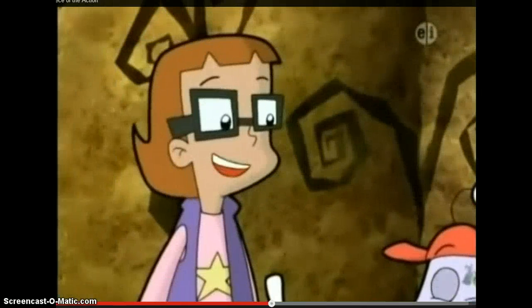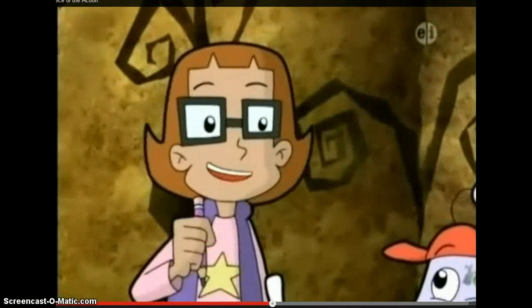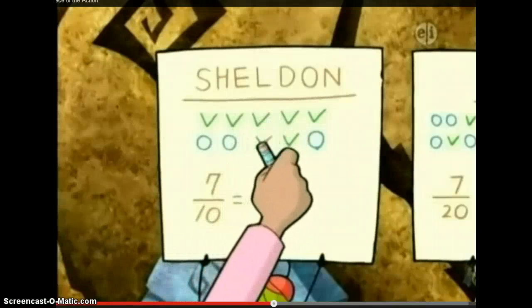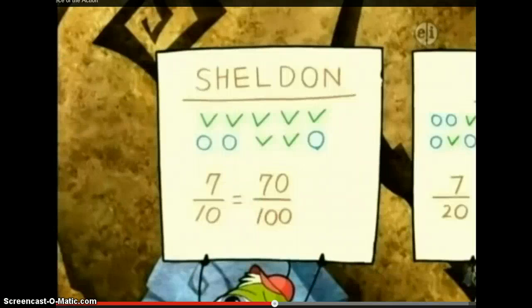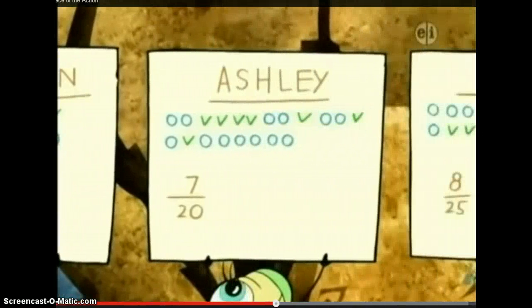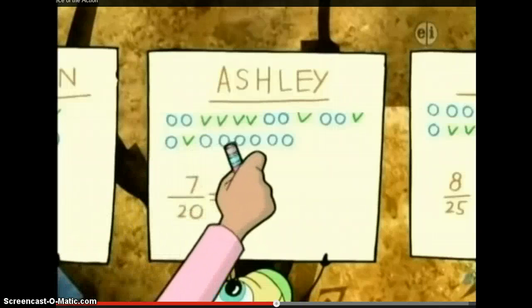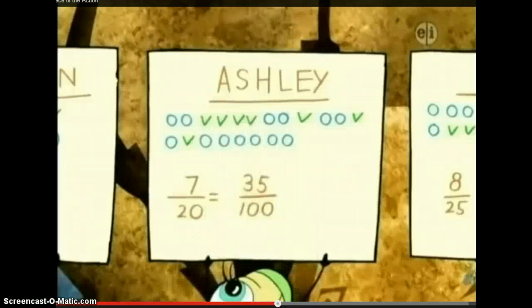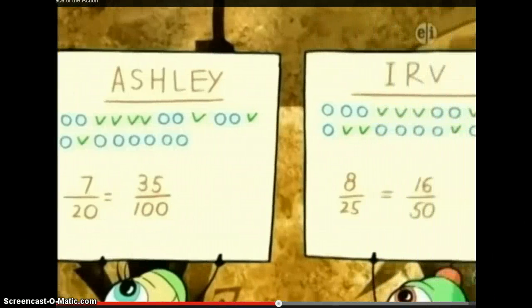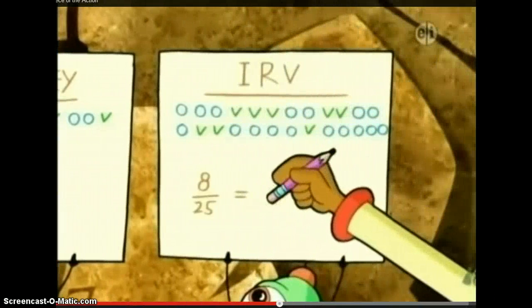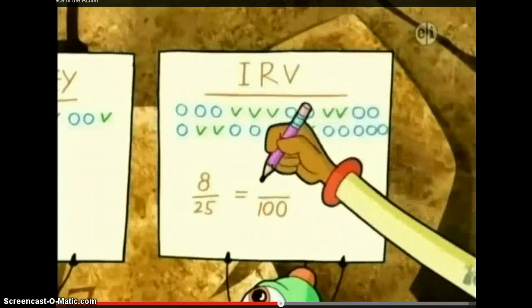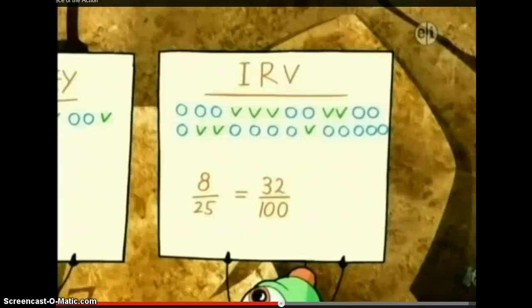Guys! We're losing time here! How about one hundred? That's a nice round number! Ditch, I think you did it! Sheldon had ten tries, right? Ten times ten is one hundred. So if he tried one hundred times, he would have had seventy hits out of a hundred. And Ashley had twenty tries. Twenty times five is also one hundred. And seven times five is thirty-five. Twenty-five times four is one hundred. So Irv's score is eight times four, or thirty-two out of one hundred.